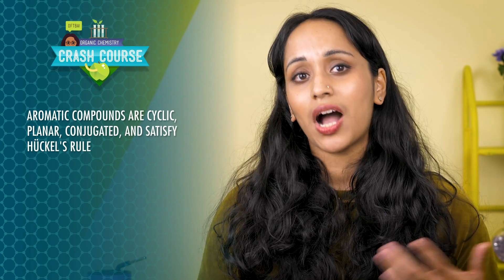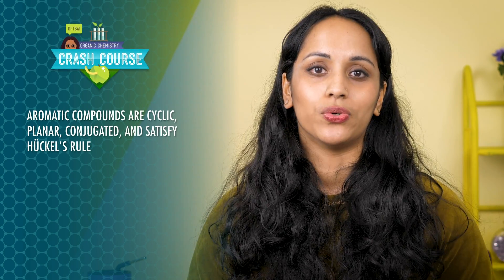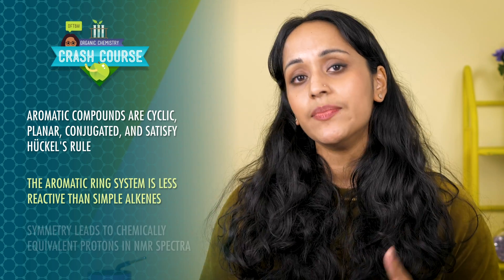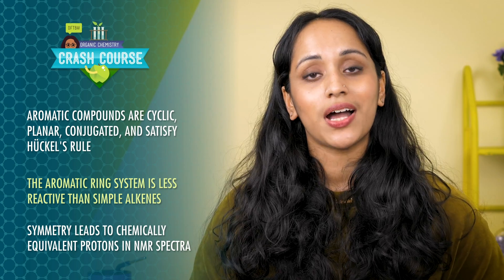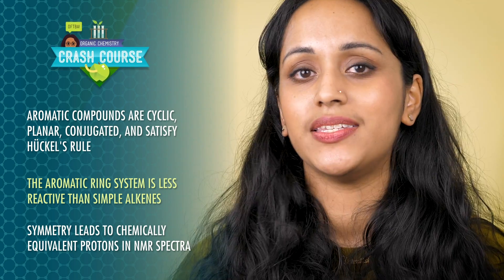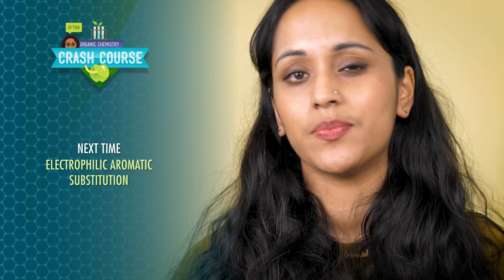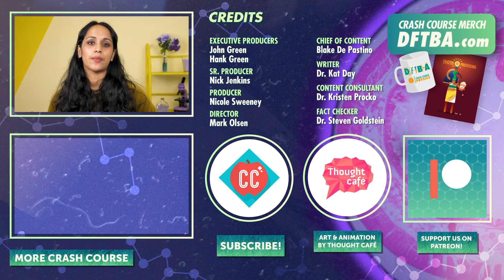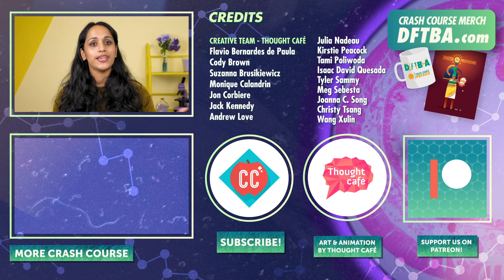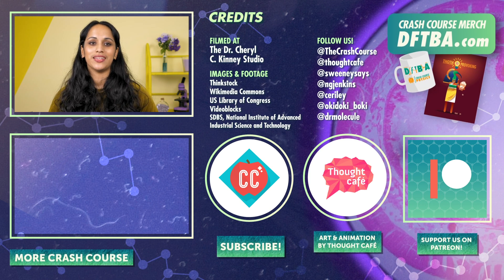In this episode, we saw that aromatic compounds are cyclic, planar, conjugated, and satisfy Huckel's rule. The aromatic ring system is less reactive than simple alkenes, and symmetry leads to chemically equivalent protons in NMR spectra. We also briefly mentioned that a halogen like bromine adds to a benzene ring in a different way than a plain old alkene, and we'll dive into how next time when we look at electrophilic aromatic substitution reactions. Thanks for watching this episode of Crash Course Organic Chemistry. If you want to help keep all Crash Course free for everybody, forever, you can join our community on Patreon.